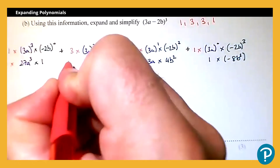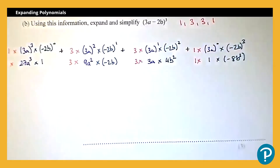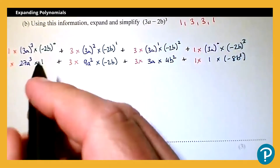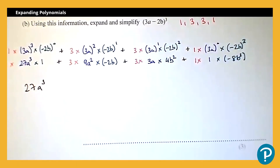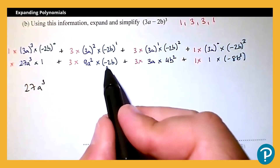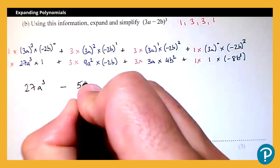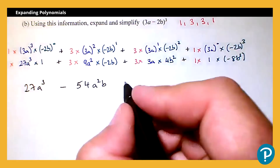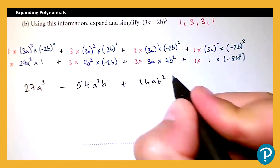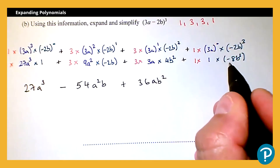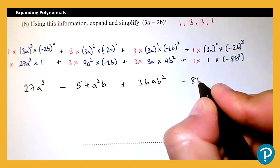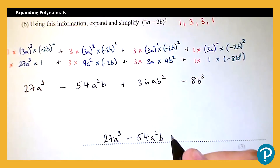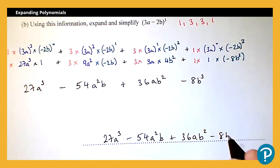Copying across those coefficients so I don't forget them: 1 × 27a³ × 1 gives 27a³. Then 3 × 9a² × (−2b): 27 × −2 gives −54a²b. Then 3 × 3a × 4b²: 3 × 3 × 4 gives 36ab². Finally, 1 × 1 × (−8b³) gives −8b³. So the final answer is 27a³ − 54a²b + 36ab² − 8b³.